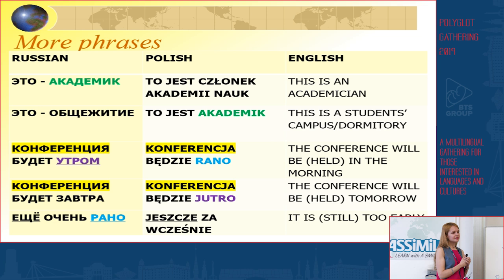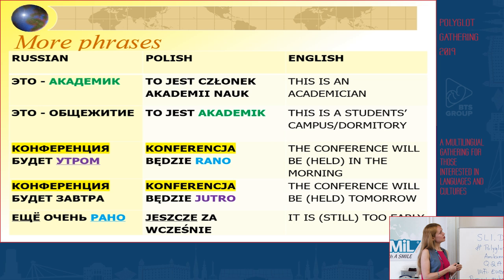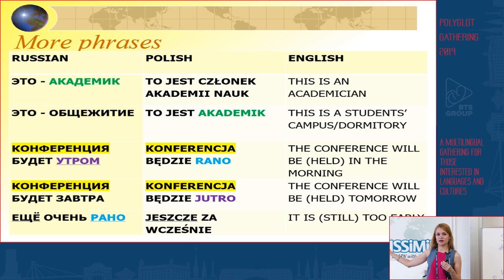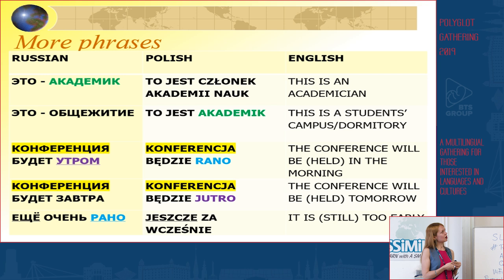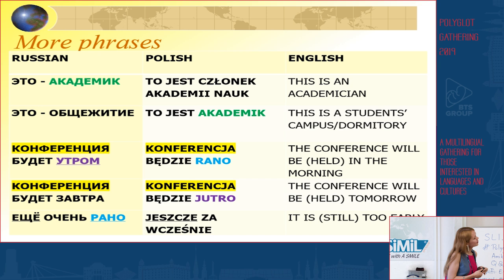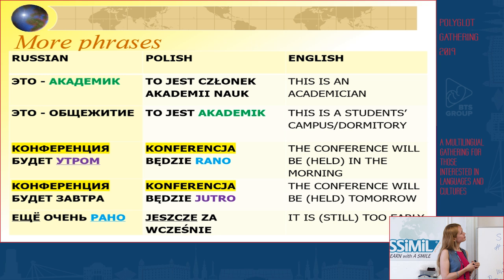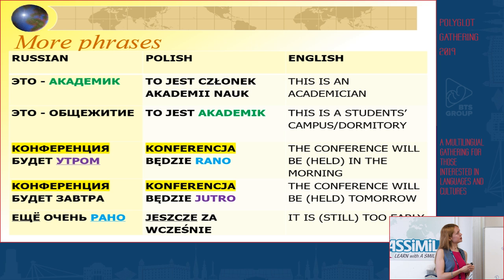Let's look at the next group of phrases. In Russian, if somebody tells you это академик, they probably want to introduce a person who is an academician. In Polish, akademik can also refer to a member of the academy, but if you hear akademik in Polish, it would more likely refer to a student's dormitory rather than a person. The Russian word for student's dormitory — what Polish calls akademik — would be общежитие.